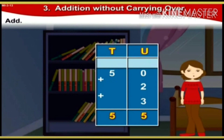Next sum: 50 plus 2 plus 3. They are already arranged in a vertical order. Units column: 0 units plus 2 units is 2 units, plus 3 units is 5 units. Tens column: we have only 5, so write 5. The answer is 5 tens and 5 units — that is 55.